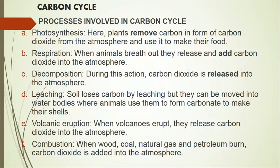Carbon circle: Processes involved in the carbon circle include: A. Photosynthesis — plants remove carbon in the form of carbon dioxide from the atmosphere and use it to make their food. B. Respiration — when animals breathe out, they release and add carbon dioxide into the atmosphere. C. Decomposition — during this process, carbon dioxide is released into the atmosphere.